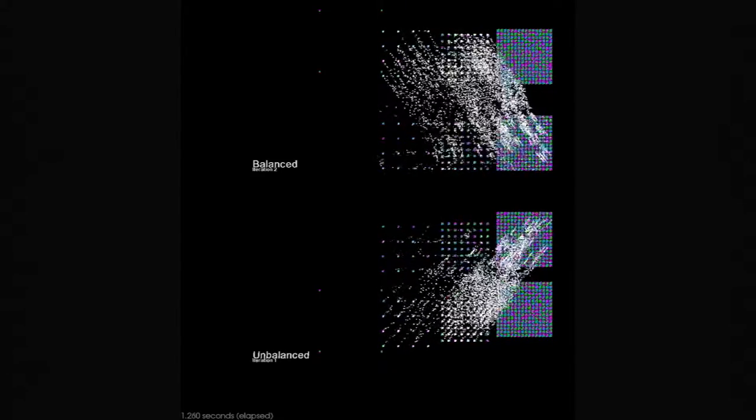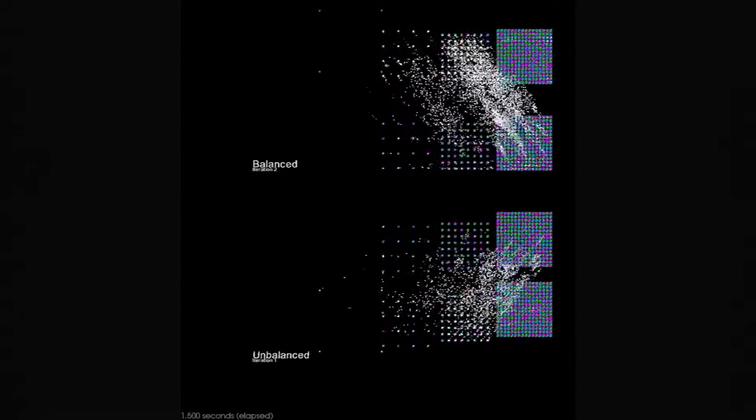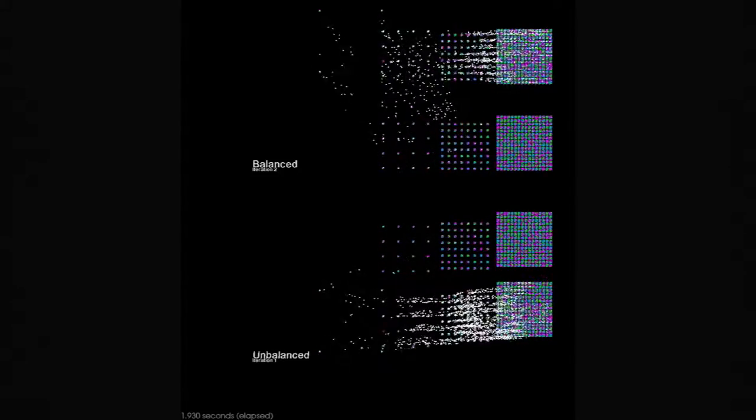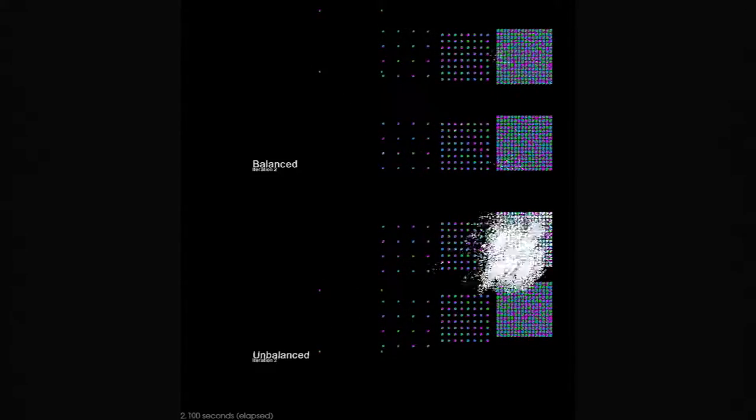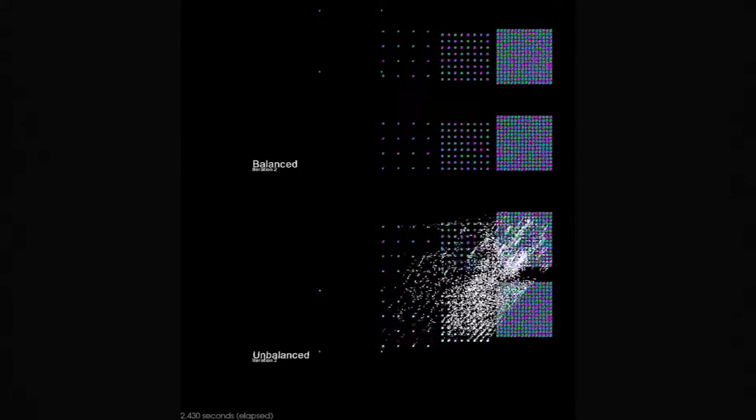An edge cut recursive graph partitioning scheme is used to determine the optimal global data distribution. Based on this information, the HPX-5 load balancer rebalances blocks in the active global address space to achieve a more balanced execution.